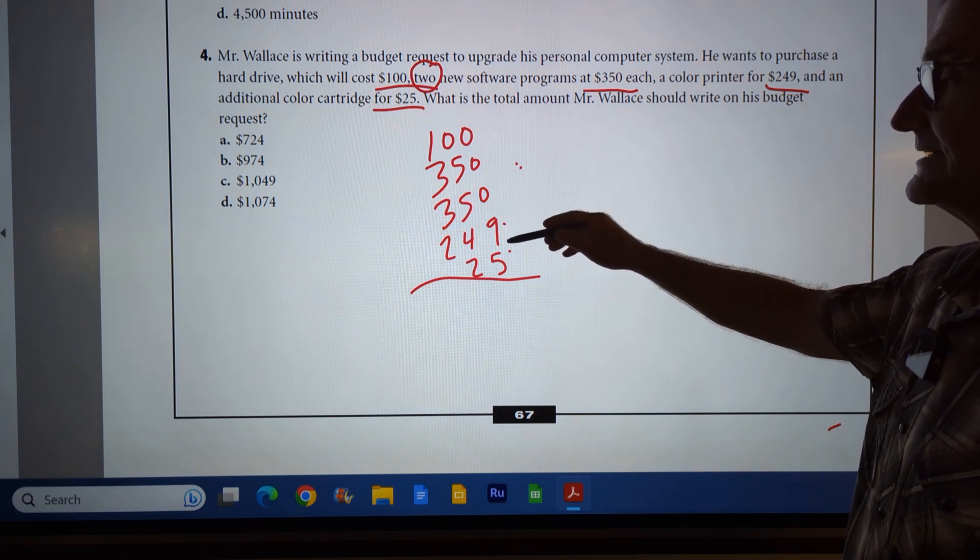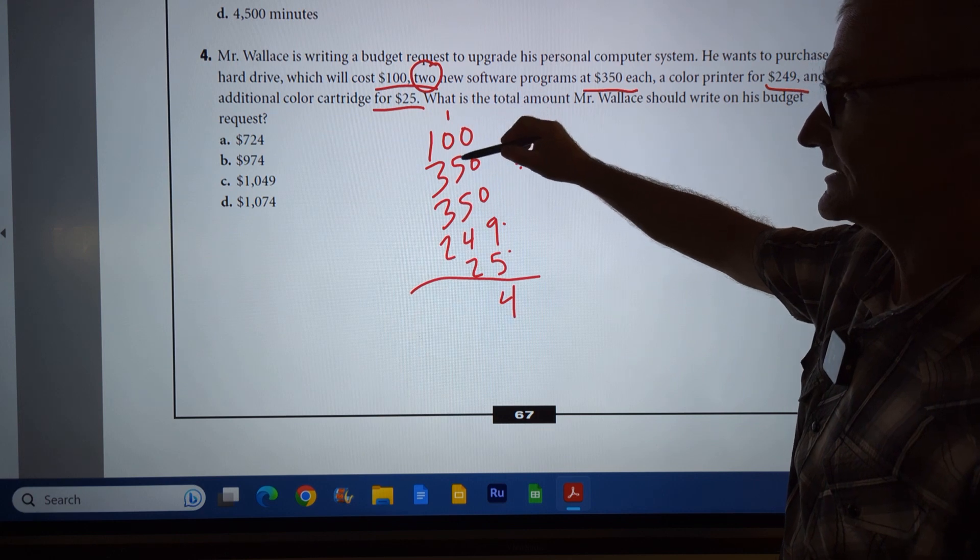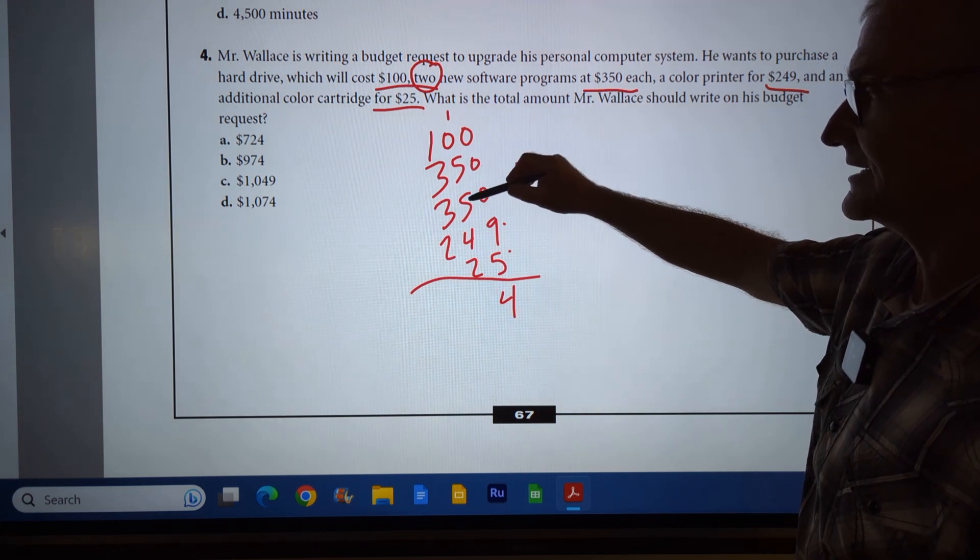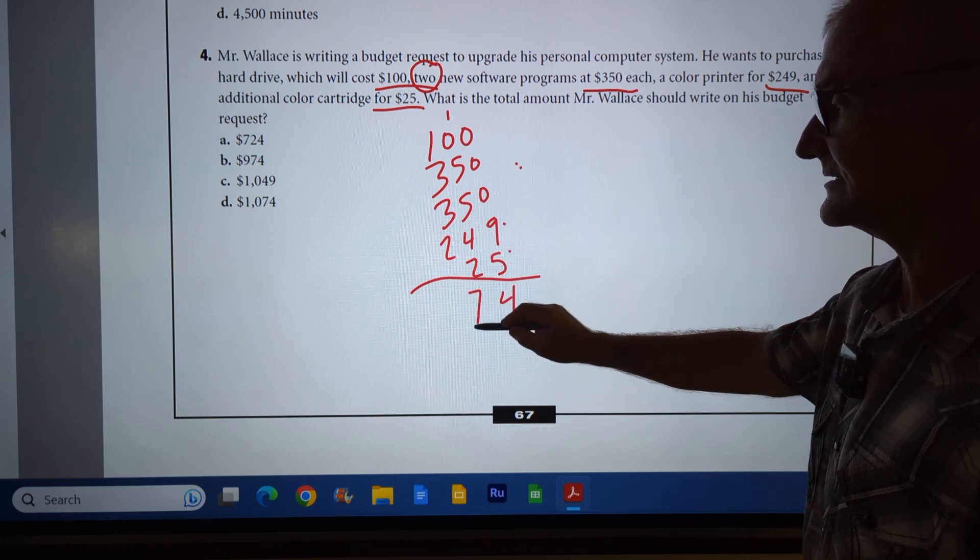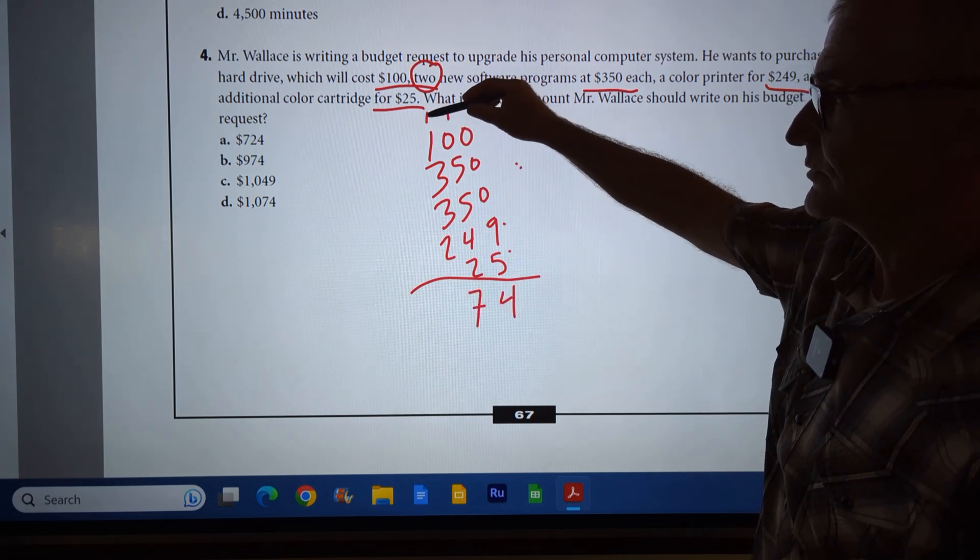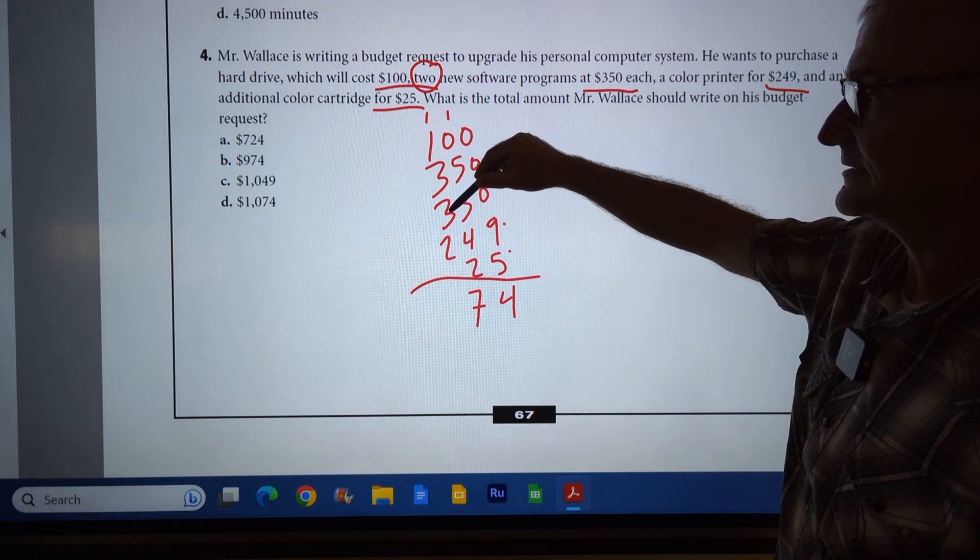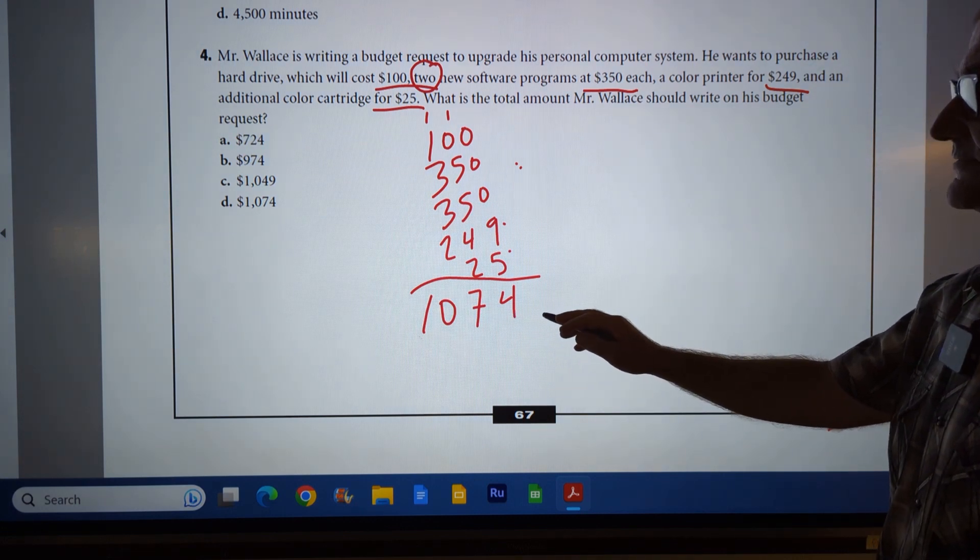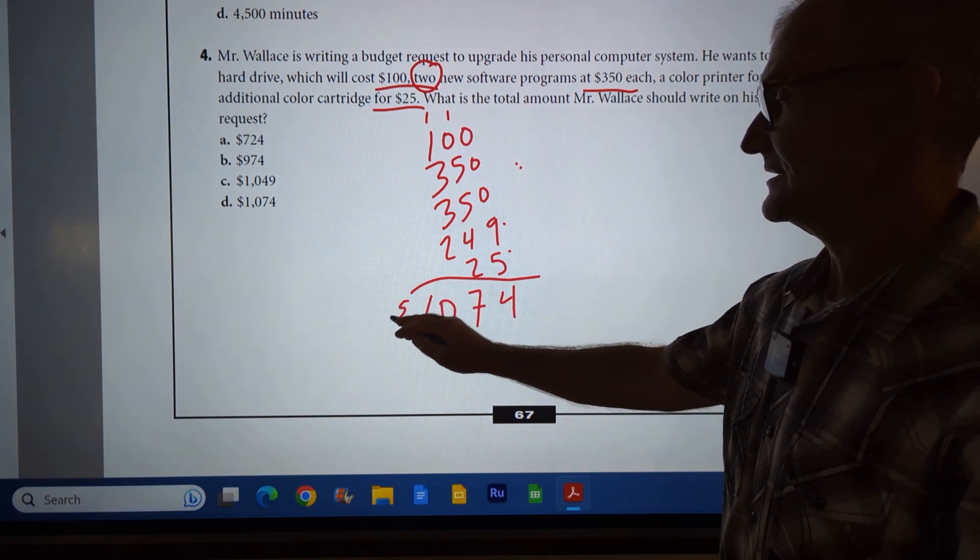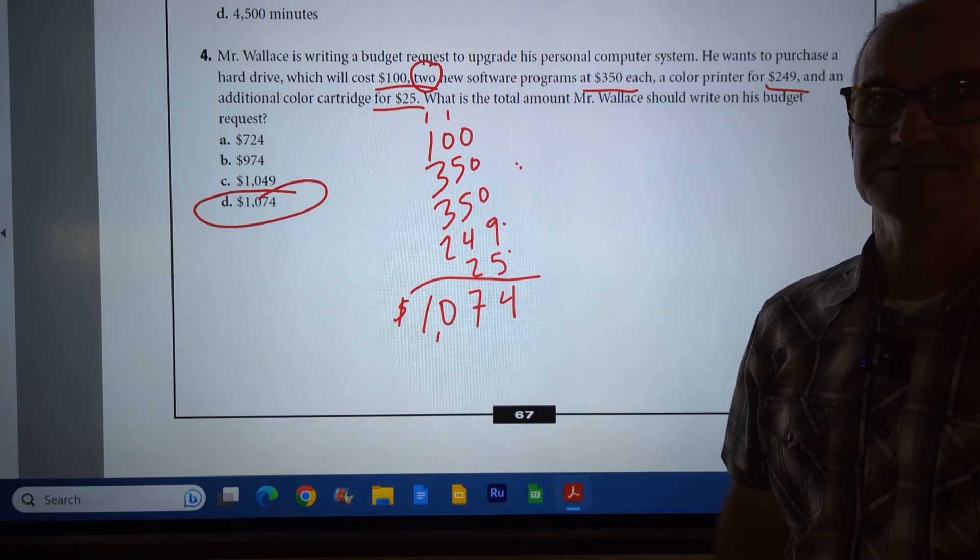Zeros, nine, nine and five, 14. Carry the one, one, five, six, 11, 15, 16, 17. Carry the one. One plus one, two, five, eight, 10. So it's $1,074. Look over here. There's my correct answer right there. Answer D.